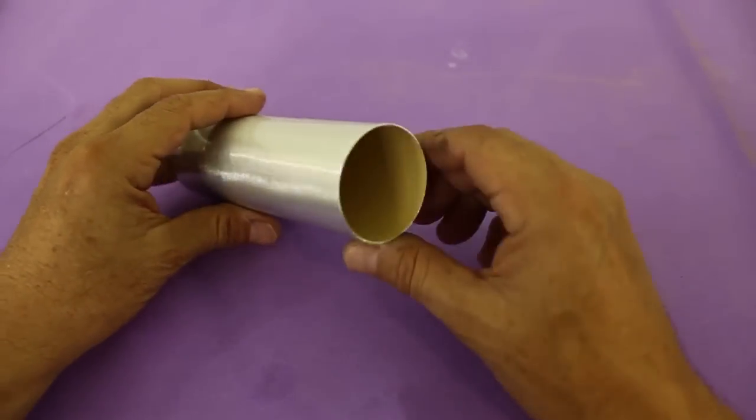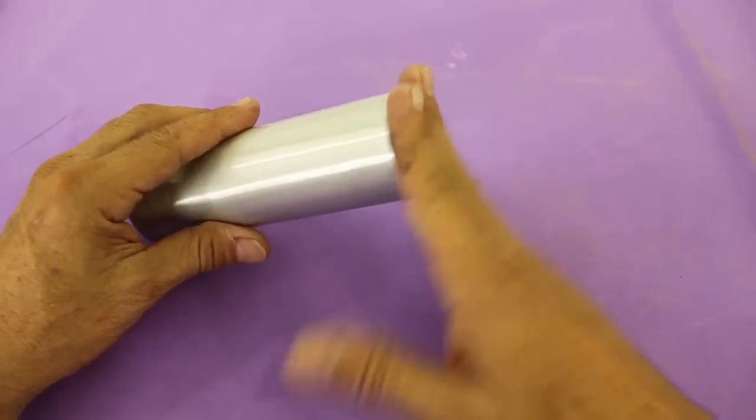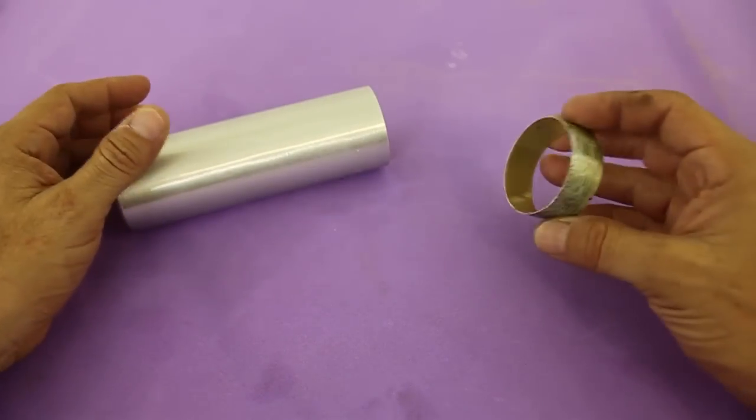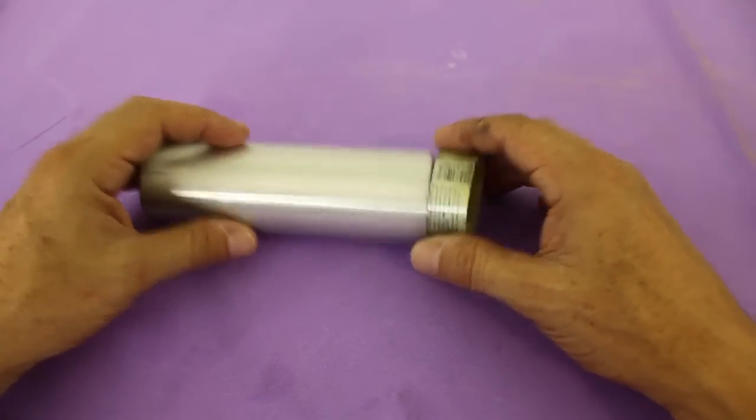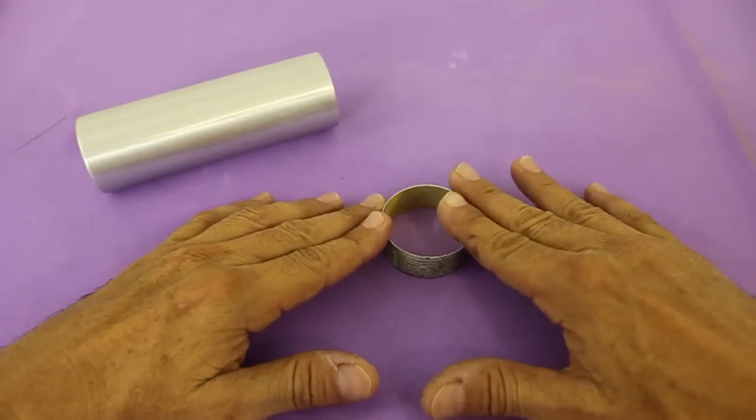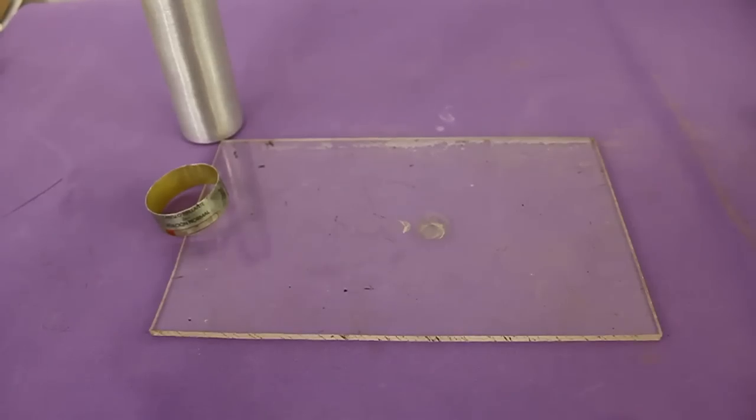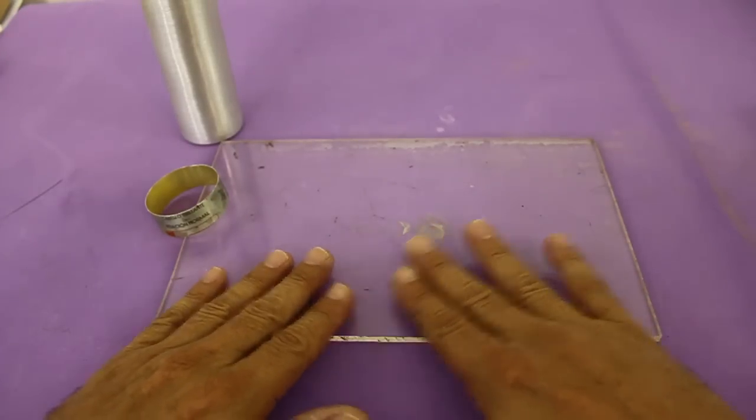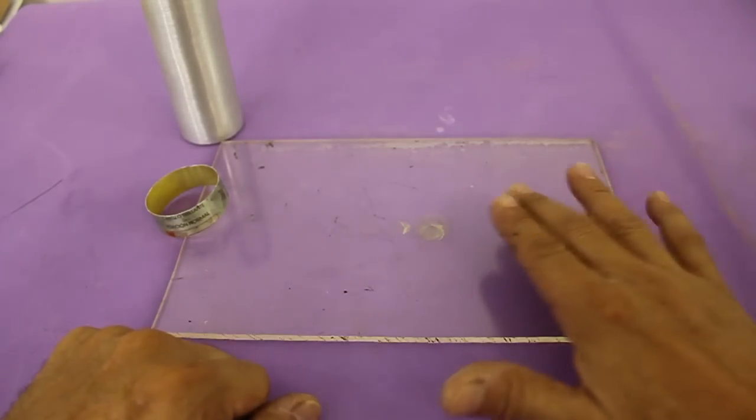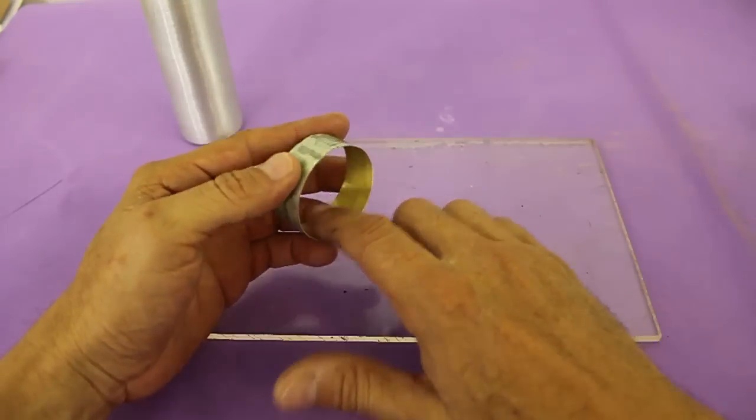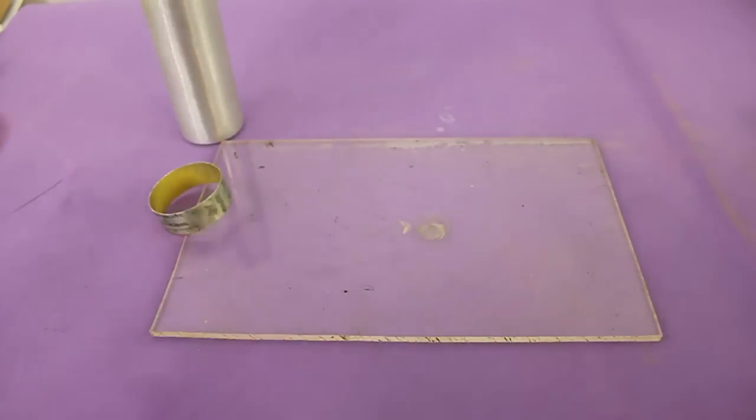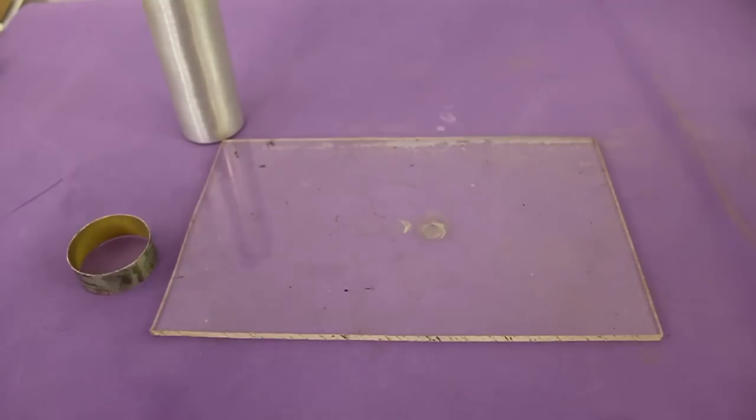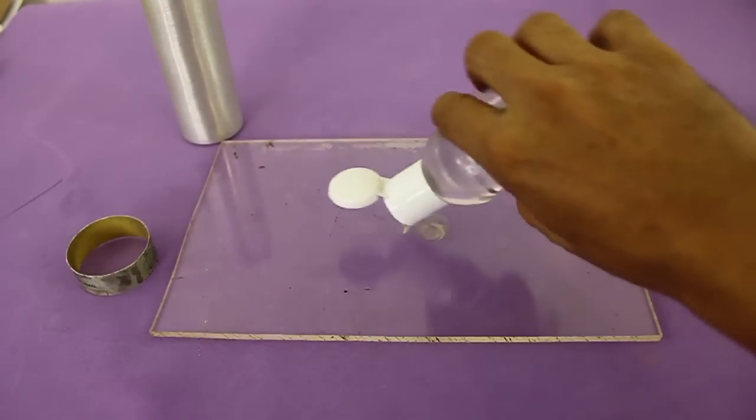Now we need to make a cap and for that we need to cut a ring from another can of the same diameter and we will make the cap with epoxy putty. We need a flat surface like a glass or acrylic and we will put some oil and also on the inside of the ring. This is to avoid the epoxy from sticking to the surfaces.